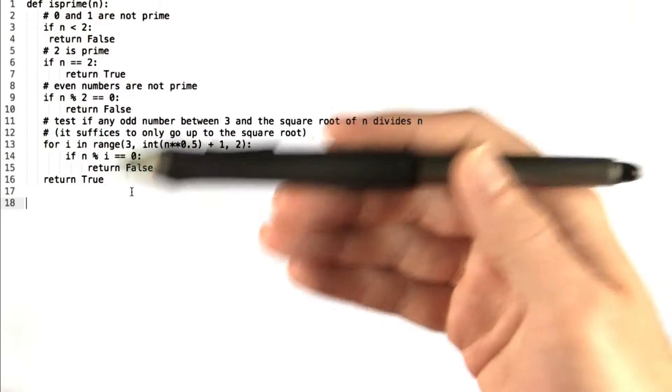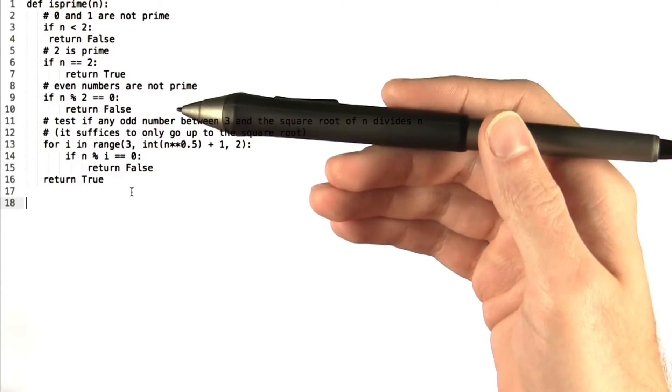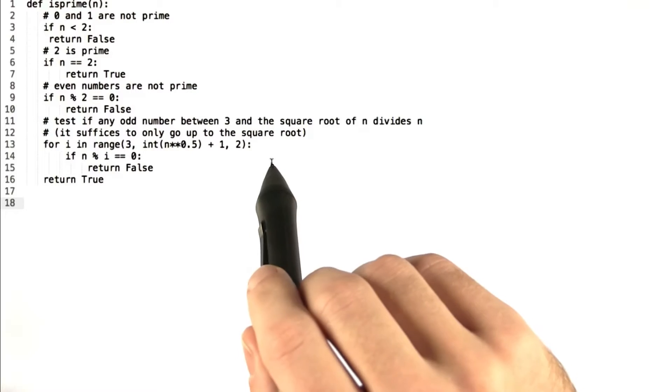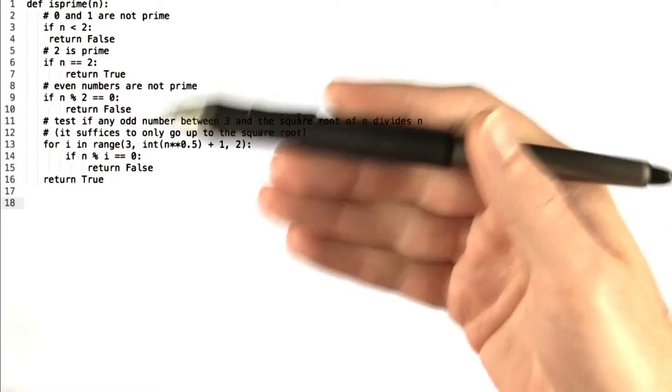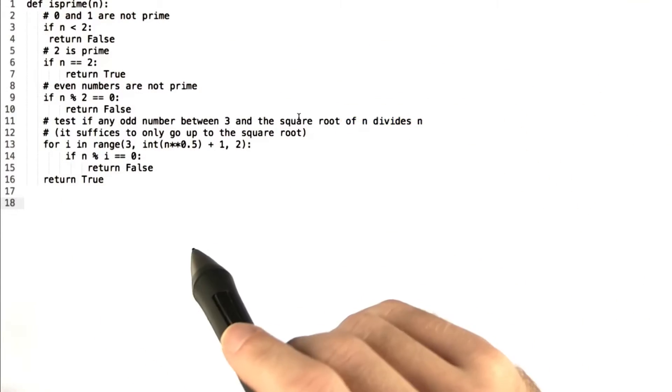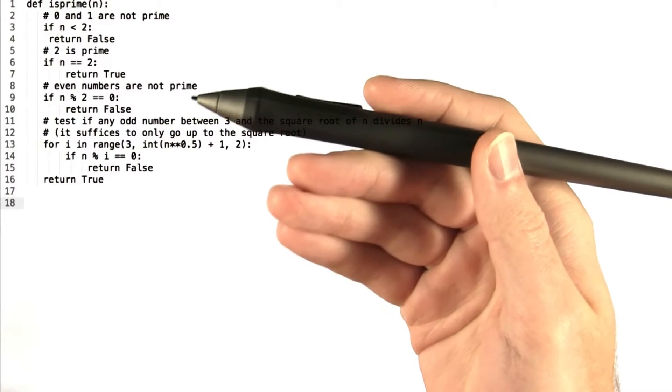Because if there are any numbers that divide n, then it's not prime. And it turns out to check for primality, you actually only need to check up to the square root of n. And we're not going to get into why that is the case right now because that's another course.